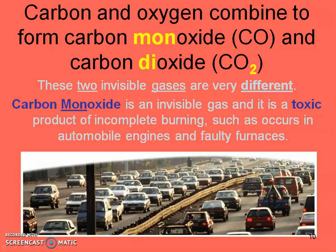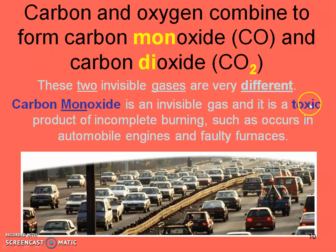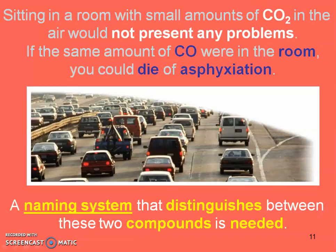In this section you'll learn how prefixes in the name of a binary molecular compound tell you its composition. Carbon and oxygen can combine to form carbon monoxide and carbon dioxide — two different compounds from the same two elements. Carbon monoxide is an invisible, very toxic gas, a product of incomplete burning in automobile engines and faulty furnaces. The prefix mono tells us there is only one oxygen, while di tells us there are two.